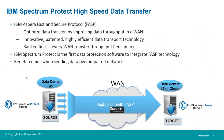Why utilize a FASP — also known as Fast and Secure Protocol? It's going to optimize data transfer by improving your data throughput over a WAN. This is especially true if you have packet loss or latency on the network between the source and target server during your Protect Storage Pool. FASP is an innovative, patented, and highly efficient data transport technology, ranked first in every WAN transfer throughput benchmark. IBM Spectrum Protect version 7.1.6 was the first data protection software to integrate FASP technology.